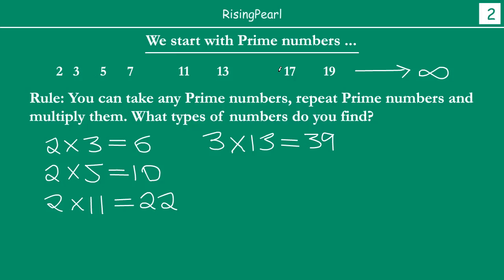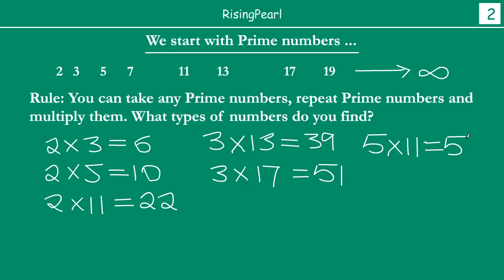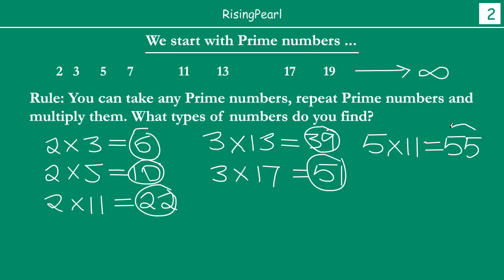Continuing: 3 times 17 gives 51, and 5 times 11 gives 55. So what I'm noticing is that if I take a collection of some prime numbers and just multiply them with each other, I get a whole collection of new numbers. I am continuously creating new numbers just by multiplying primes. The rule also allows repeating prime numbers — we haven't explored that part yet.